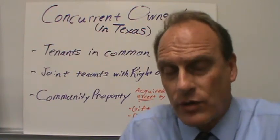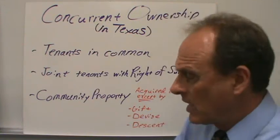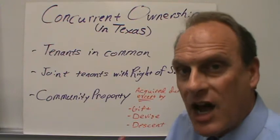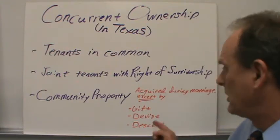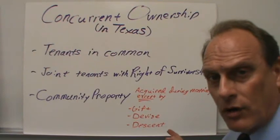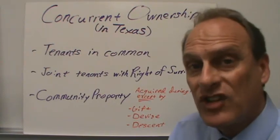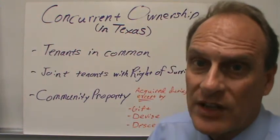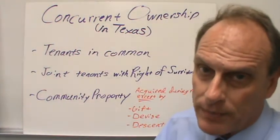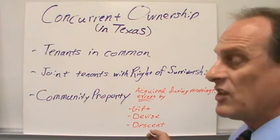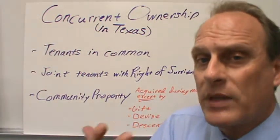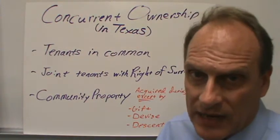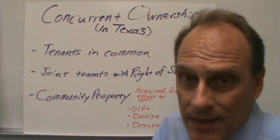Even if a gift is acquired during the marriage, it's not community — it's separate property. So all property acquired during marriage is community property unless received by gift, devise, or descent. Devise means someone leaves you something in a will — that would not be community property. Descent is when someone dies without a will and the heirs take the property as next of kin — again, that would not be community property.